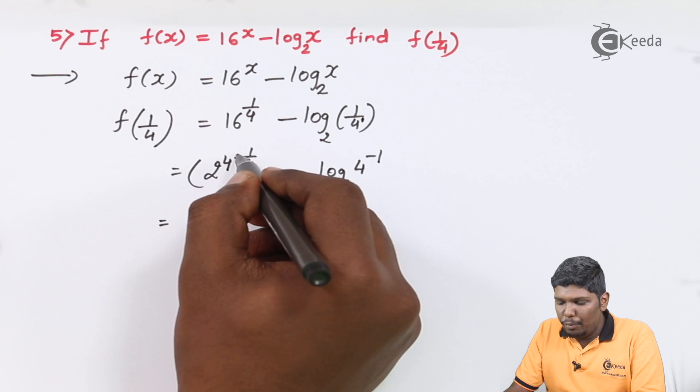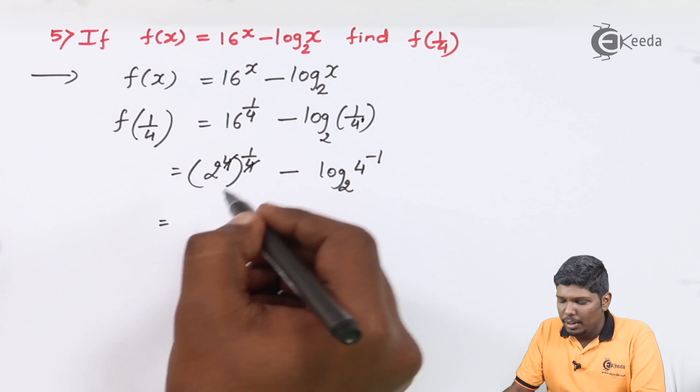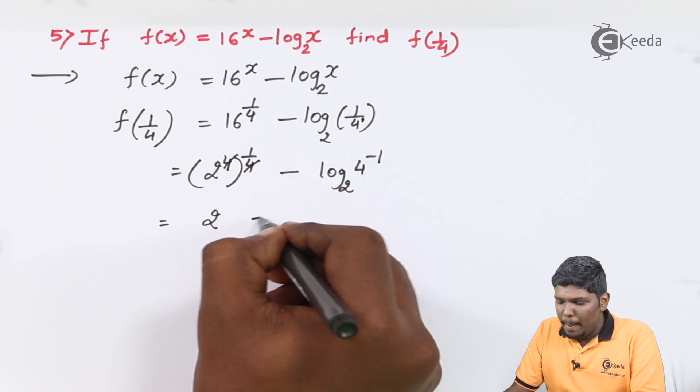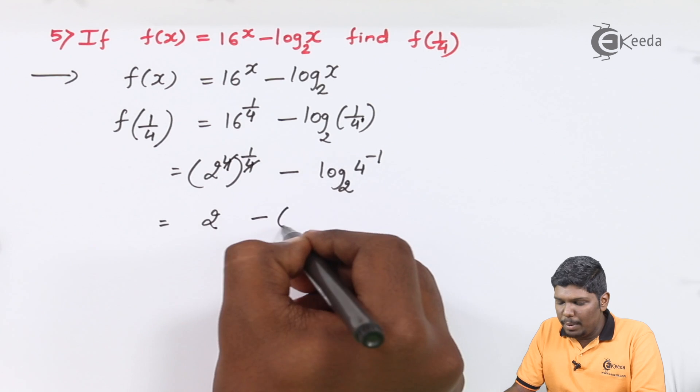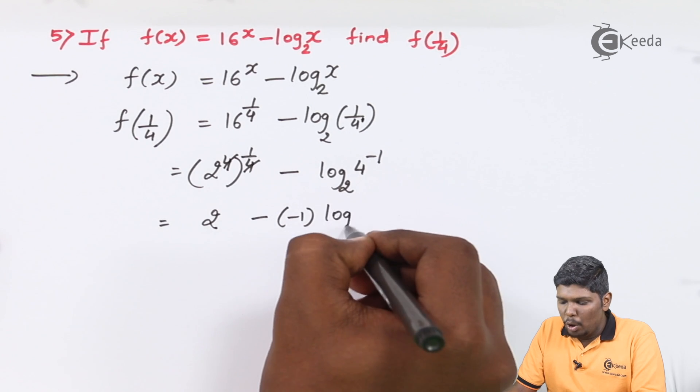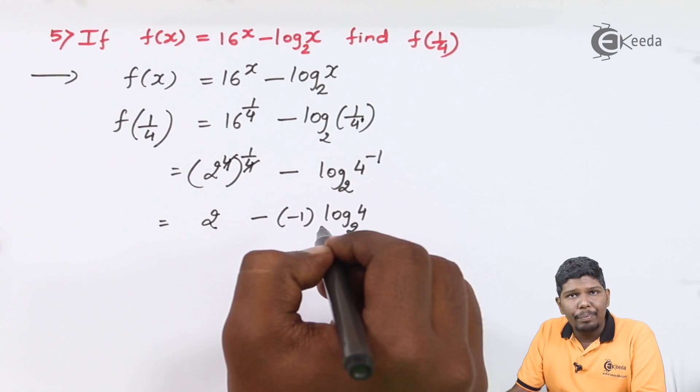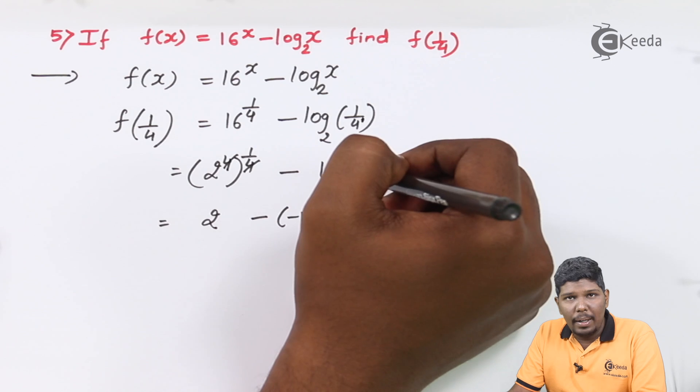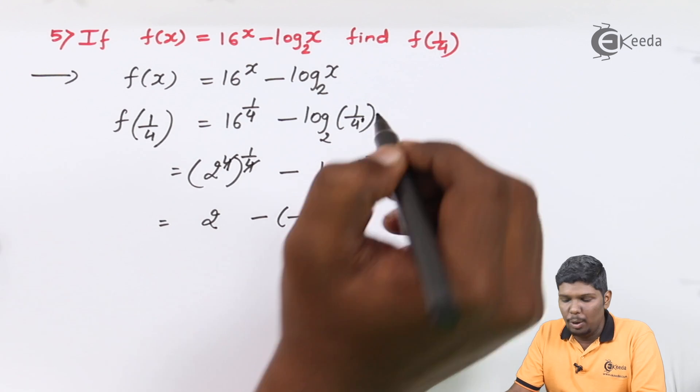Here 4th root and power 4 will cancel each other. So we will get 2 minus, minus 1 will come down and this becomes log 4 to the base 2. We have used the same properties that are used in the previous videos.